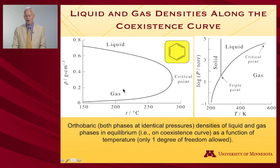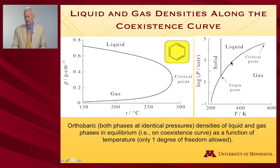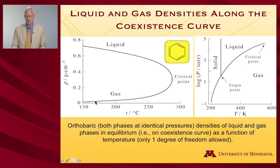This left-hand plot for benzene shows the density of the two different phases—gas and liquid—as a function of temperature, letting the pressure adjust so that both phases continue to be present. As temperature is raised, the pressure must increase as well to stay on the coexistence curve. At low temperatures, the gas is quite dilute, while the liquid, being a condensed phase, has a much higher density.